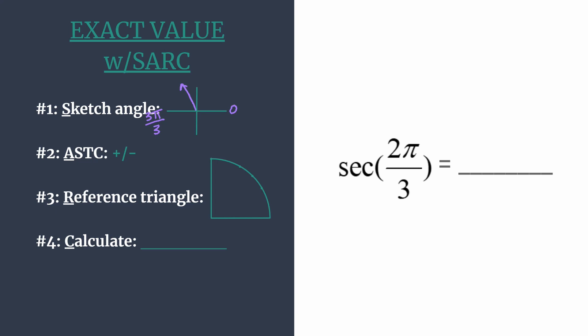Alright, so now that we have our angle's terminal side sketched, we can move on to decide the sign for our exact value. And we use the acronym ASTC. And that just tells us which trig functions are positive in each quadrant. So starting in quadrant 1, A, so all are positive.